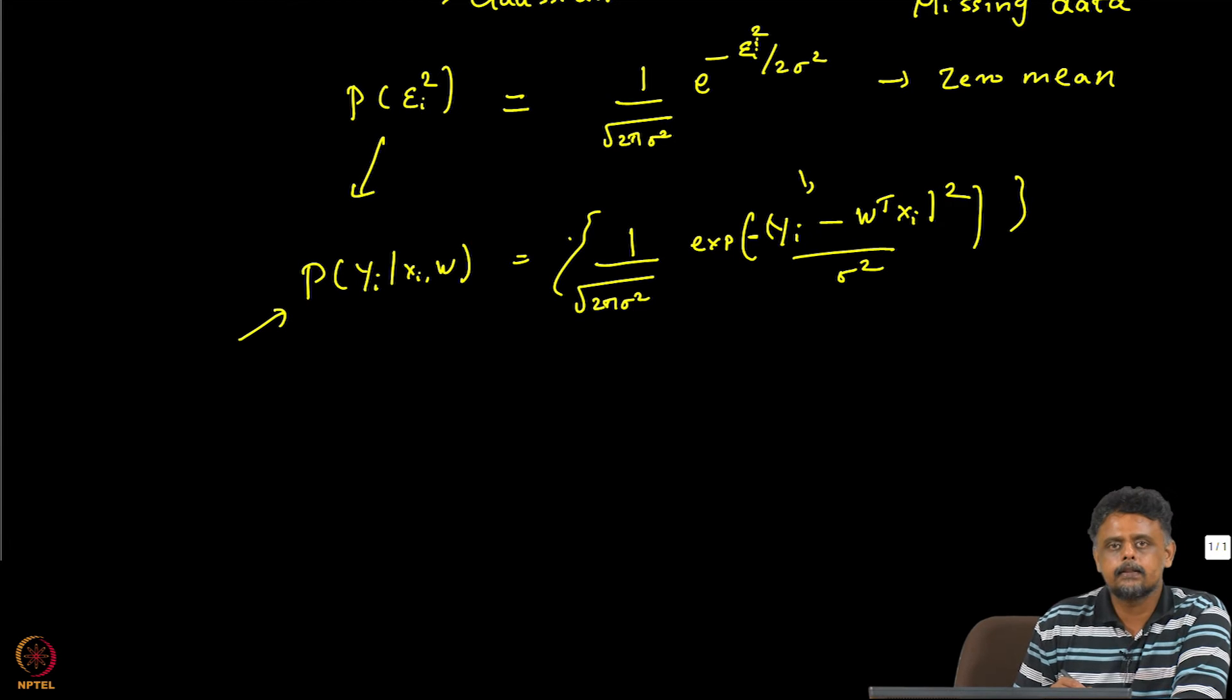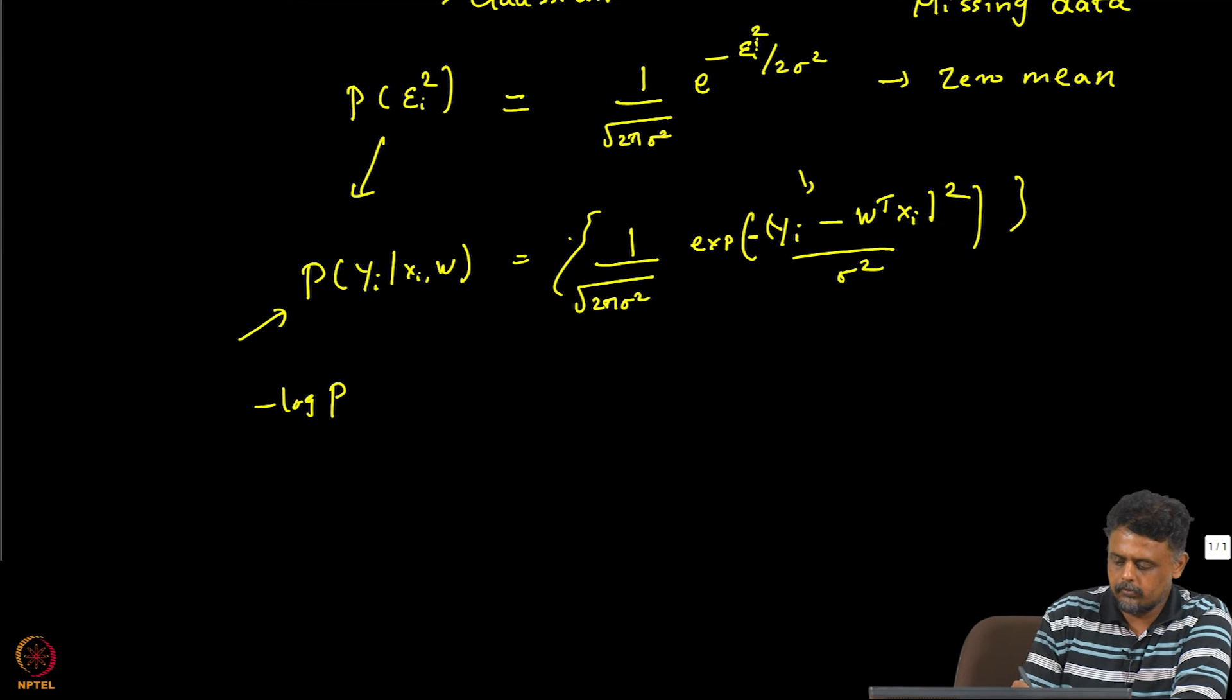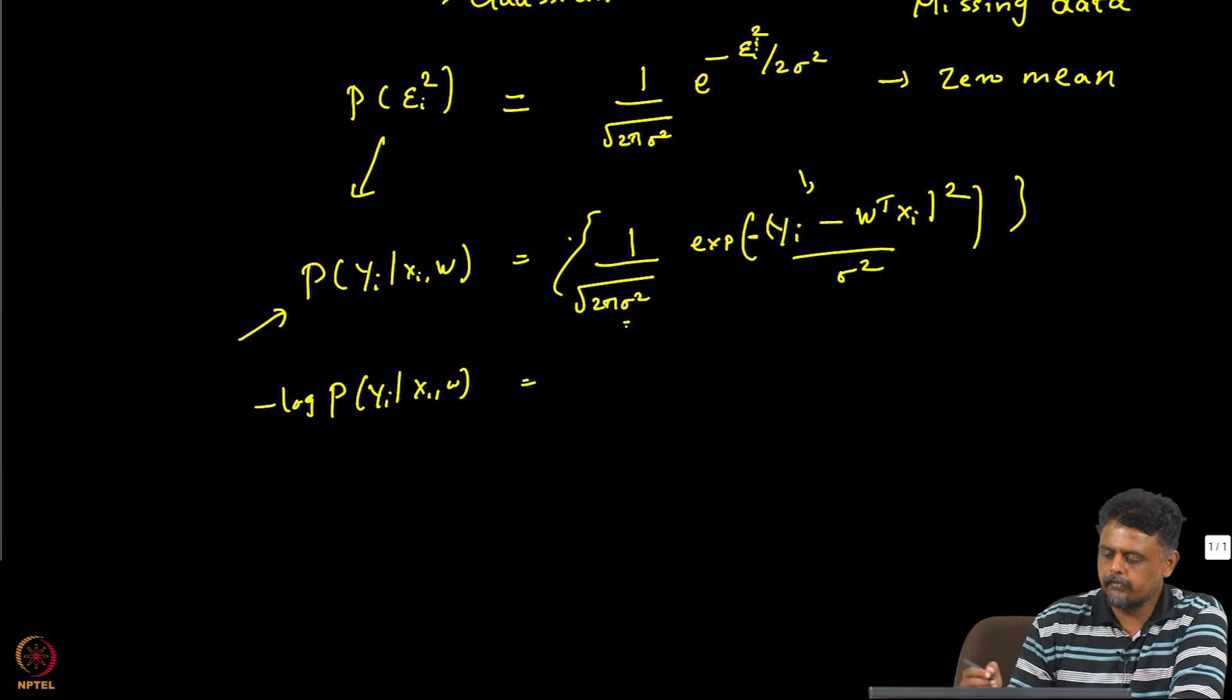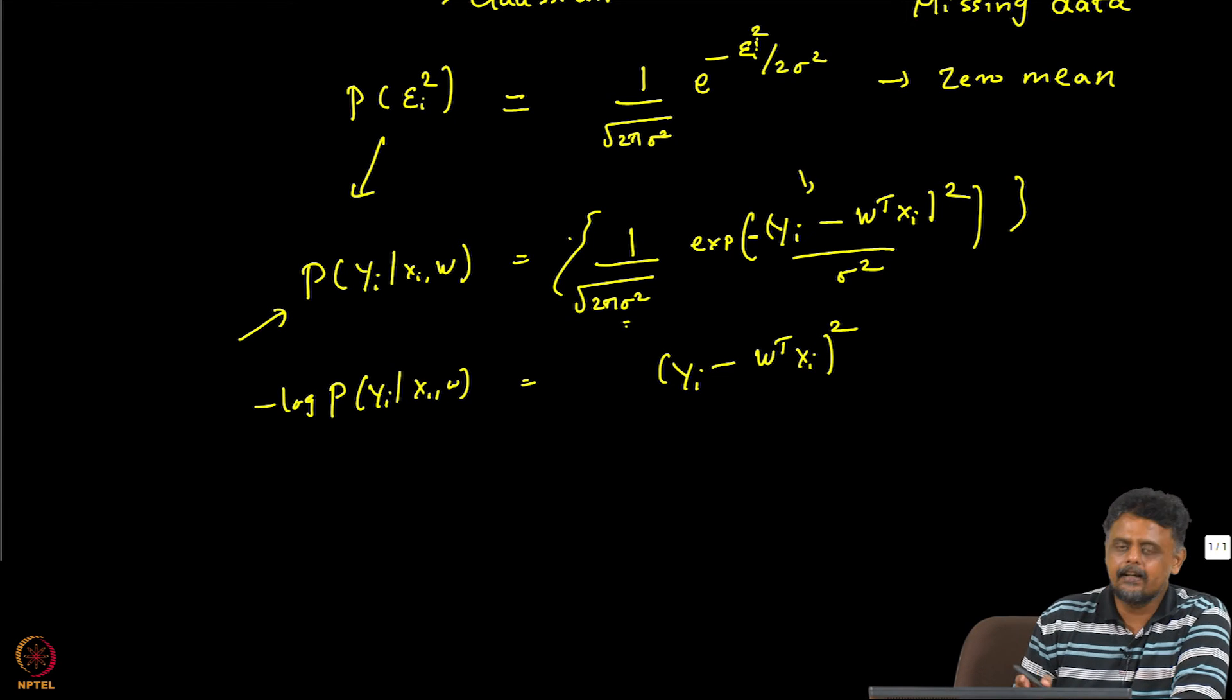And another way of looking at it is we can also maximize any other function of P. In this case if you take the negative log of P, then I am going to ignore some of the additive factors here, you will get (yi - W^T xi)² over 2σ². Again I have just written it for one data point.